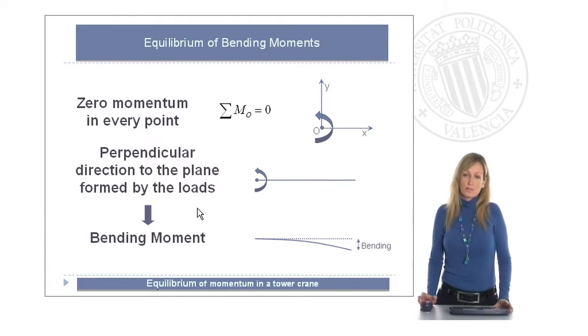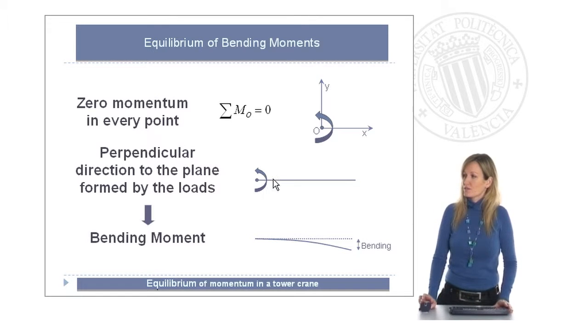And this is why, to simplify the drawings, we are going to use this curved arrow to represent the direction of the rotation that this moment would produce in the structure. This bending moment would create a deformation in a beam, for instance, like the one you can see in this simple drawing.